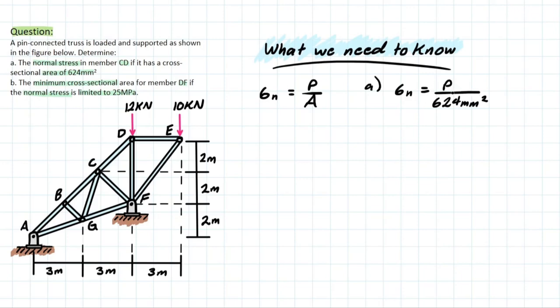So we know that normal stress is going to equal P over 624 millimeters squared. But what's P? If we're looking at member CD, we can identify that the force referring to you is going to be that internal force within the member. So that leaves us with a final formula for normal force at CD, which is going to equal FCD over 624 millimeters squared.